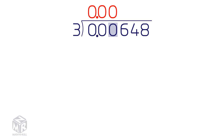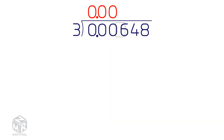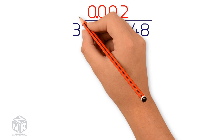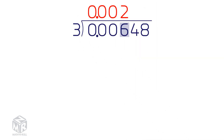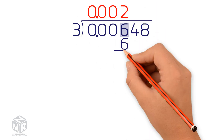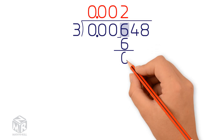Now we ask ourselves how many 3's are in 6. There are two 3's inside of 6, so we write 2 directly above the 6. Now we multiply 3 by 2. We write the product directly underneath the 6 and subtract. We get 0.